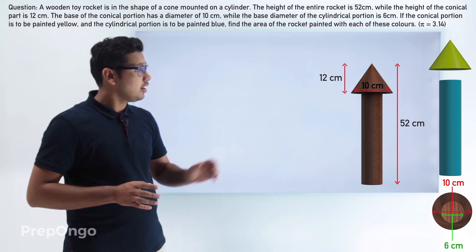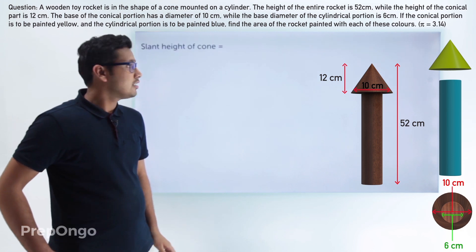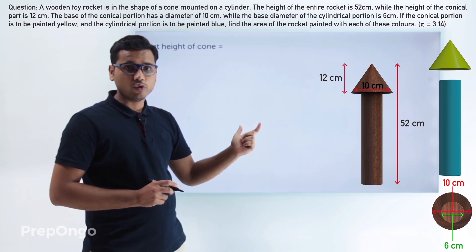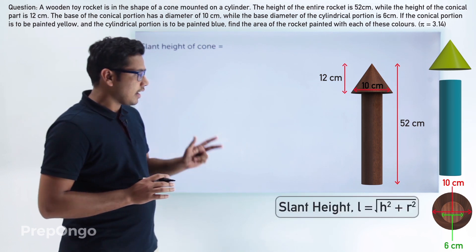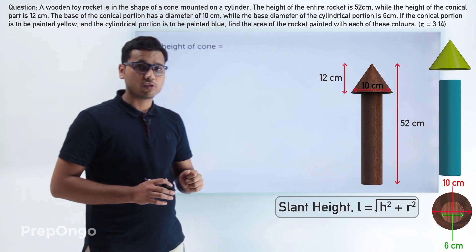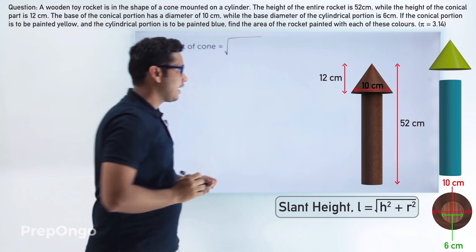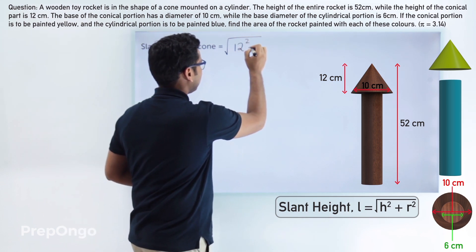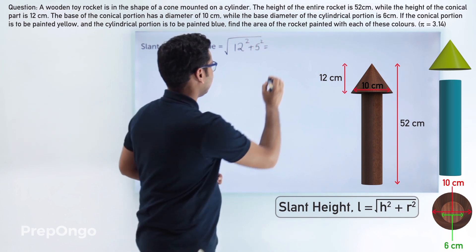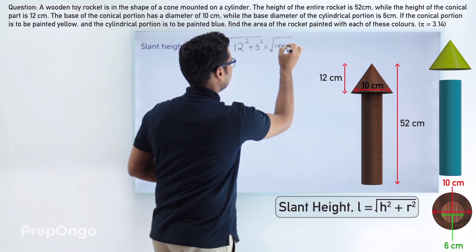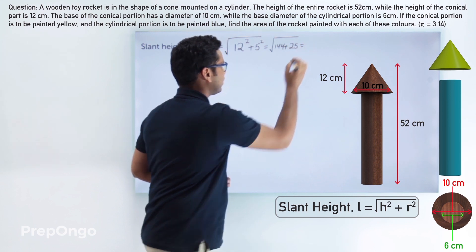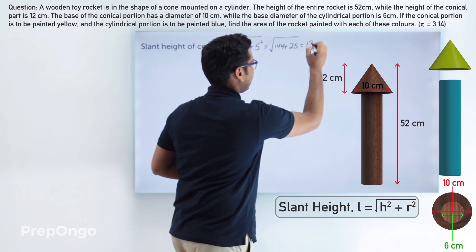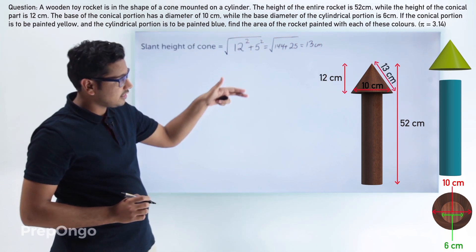First, we have to find out the slant height of the cone. The slant height formula is L = √(h² + r²). Here h is 12 centimeters and r is 5 centimeters. So this will be √(12² + 5²) = √(144 + 25) = √169 = 13. So the slant height comes out to be 13 centimeters.